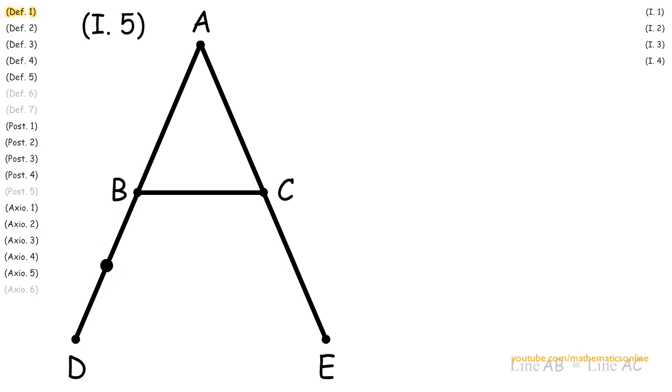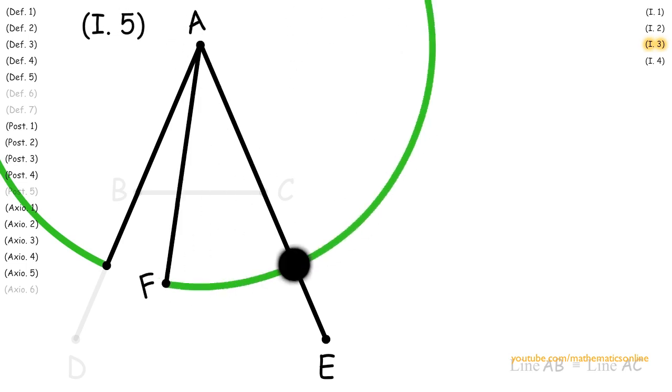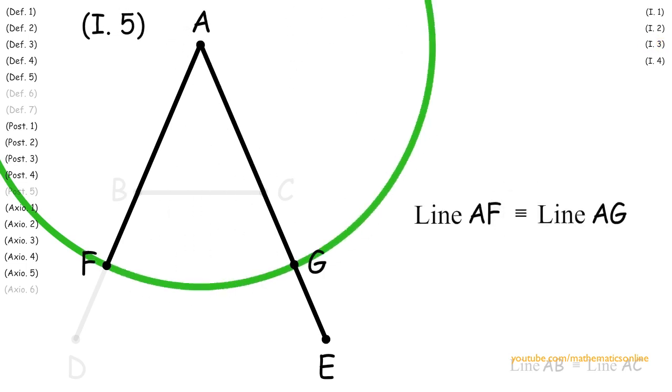Now on line BD, we will create point F. So now with lines AF and line AE, we apply Proposition 3 to get line AF is congruent to line AG.